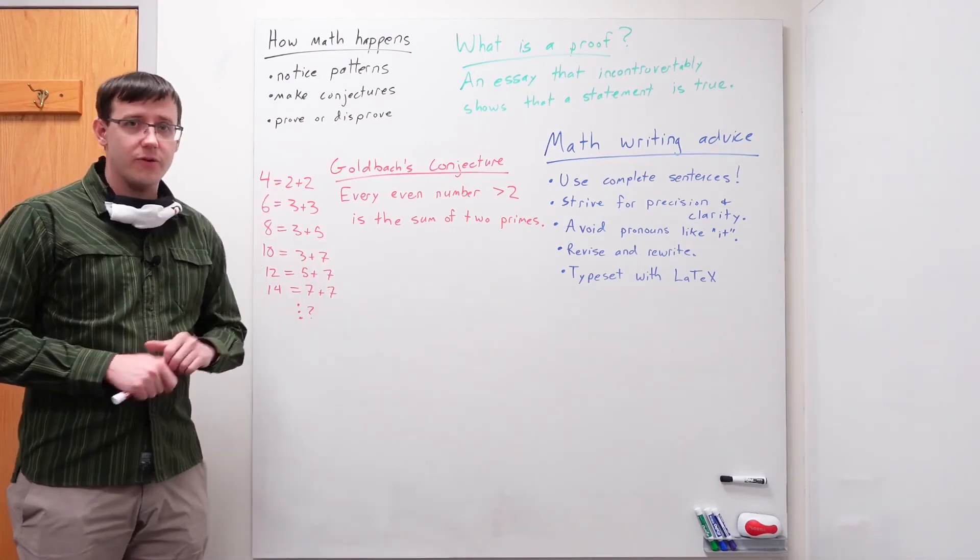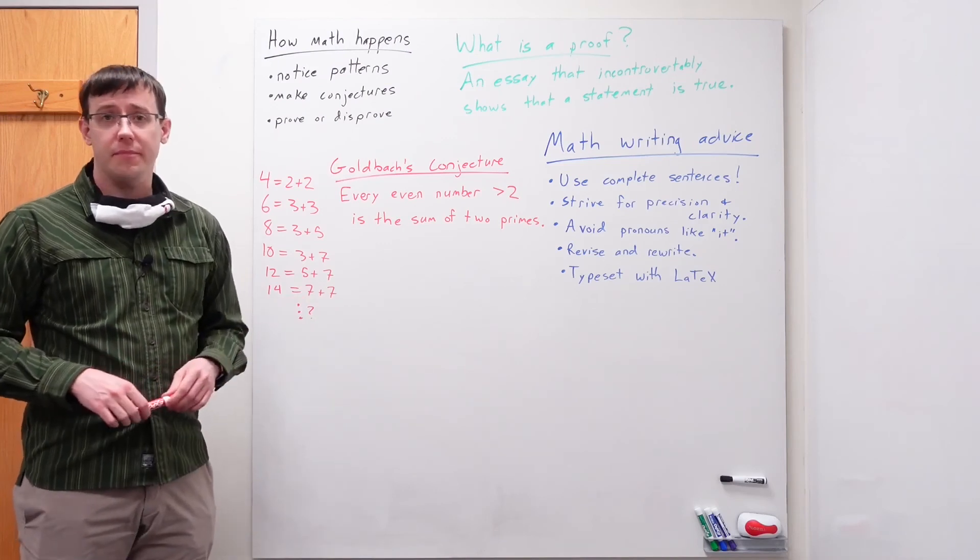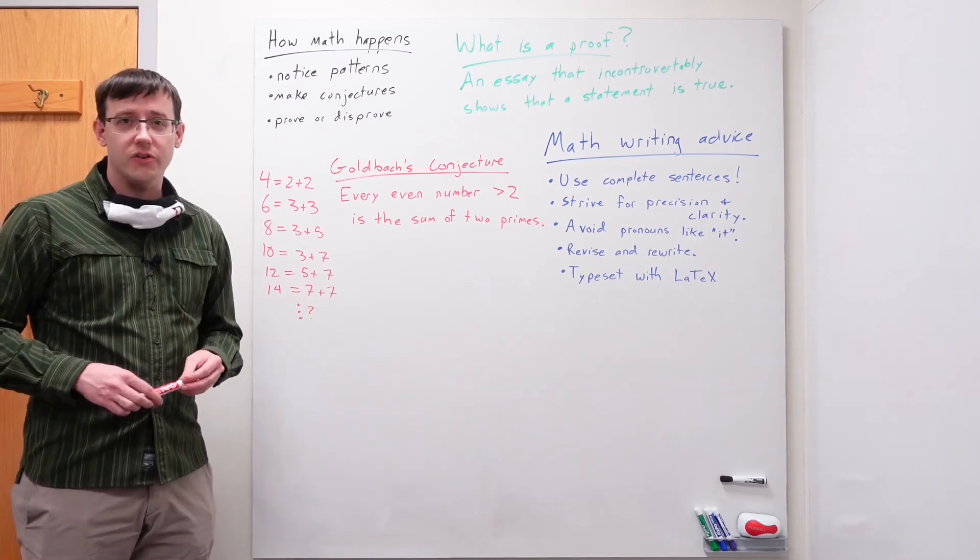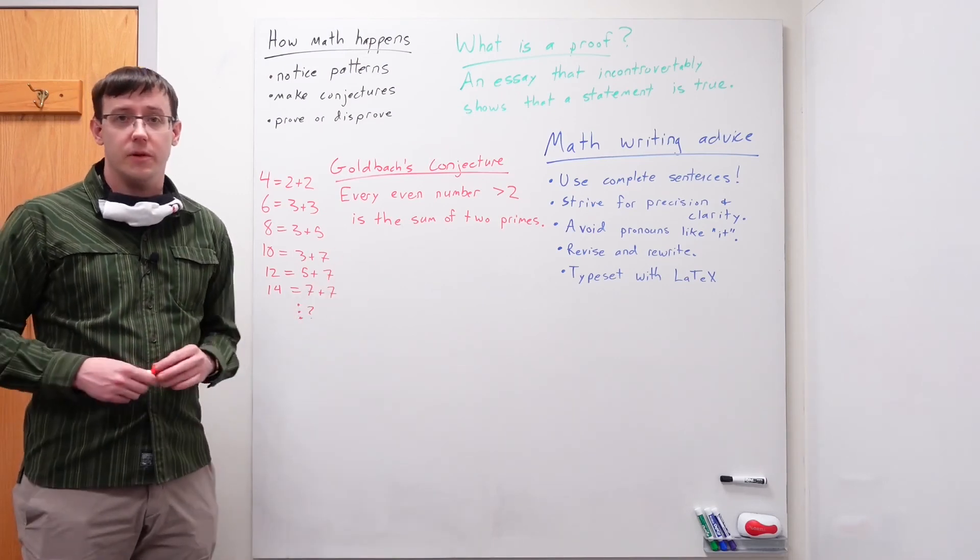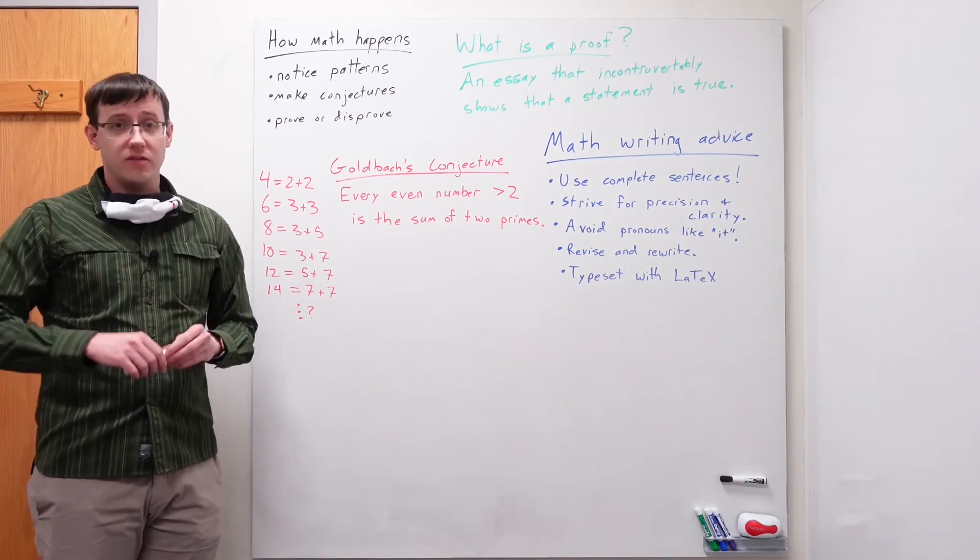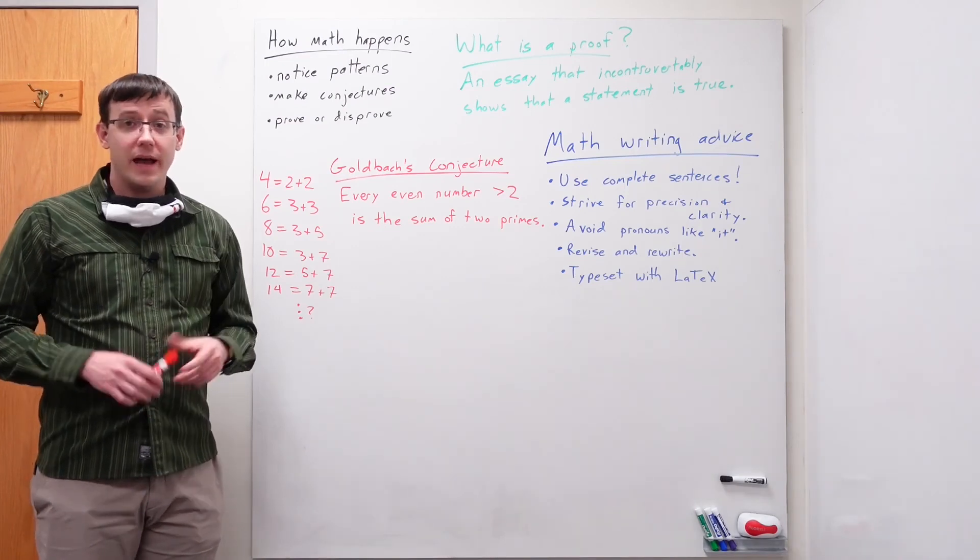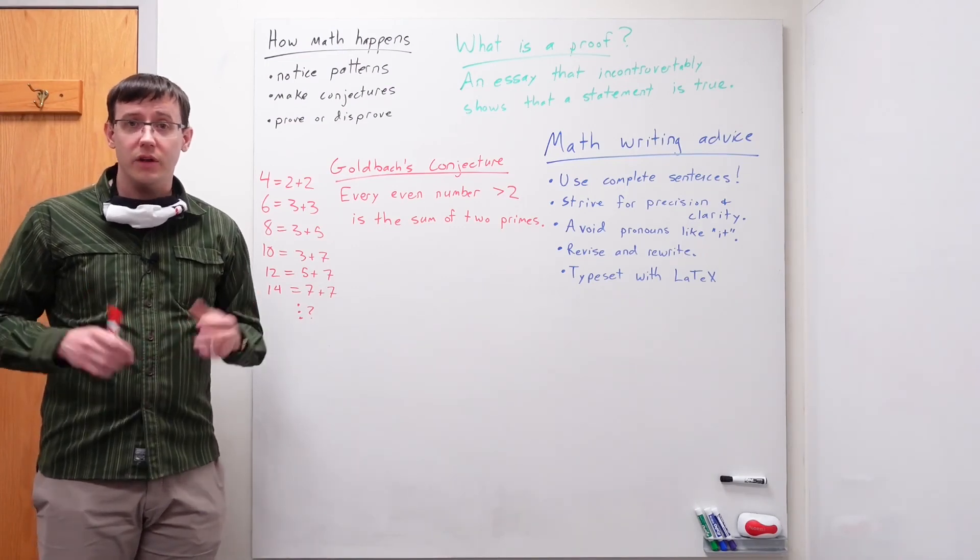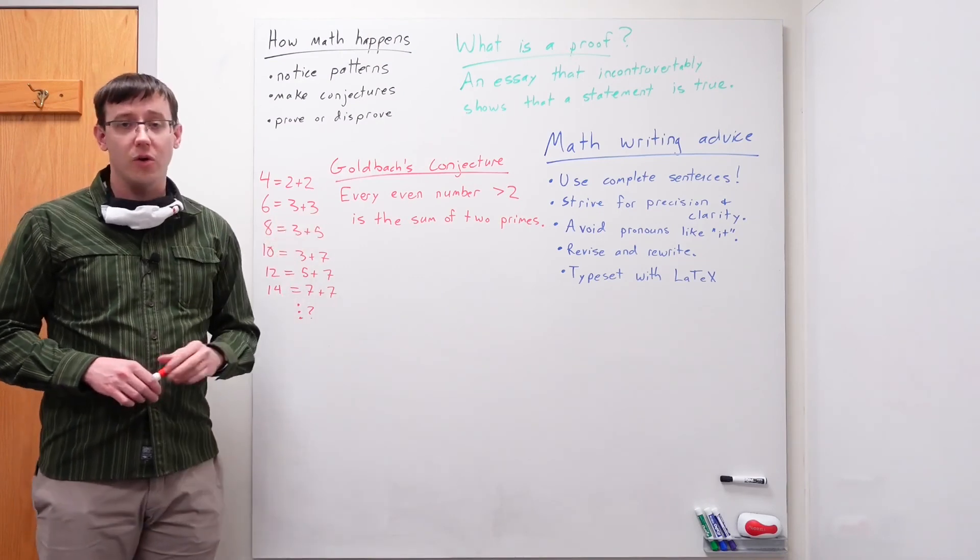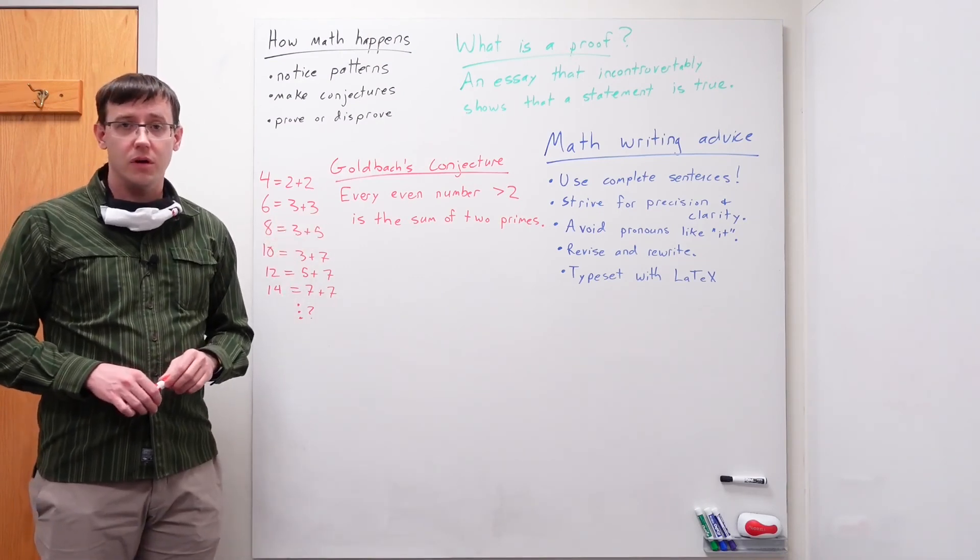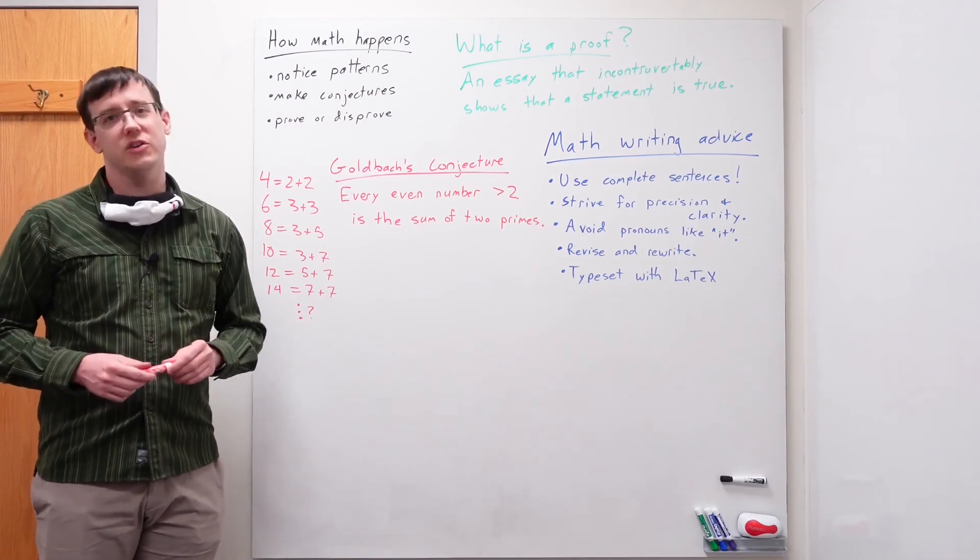If we write down the first few even numbers, we can easily come up with primes that sum to them. And brute force computational search has shown that this pattern holds up through ludicrously large even numbers. But despite centuries of effort, the general conjecture remains unproven. And at this point, it would be an equally awesome result to either prove that this pattern must always hold for any even number, or to find just a single counterexample disproving the conjecture.